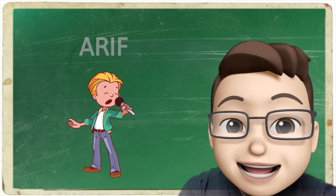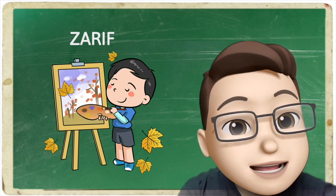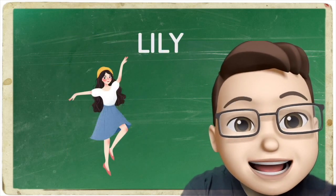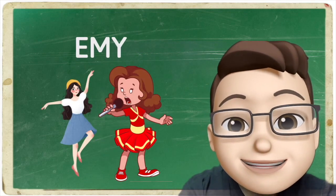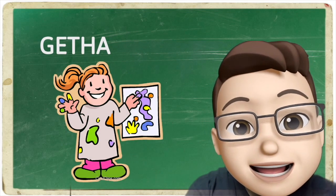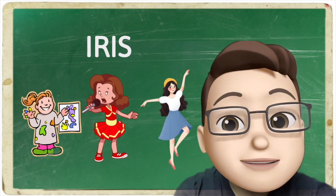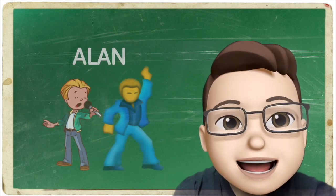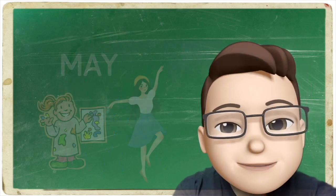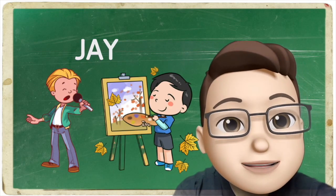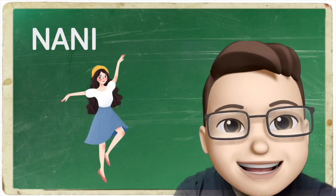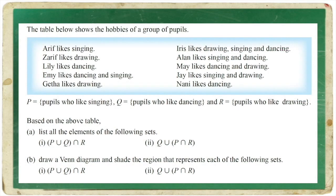Arif likes singing. Zarif likes drawing. Lily likes dancing. Amy likes dancing and singing. Gita likes drawing. Iris likes drawing, singing and dancing. Alan likes singing and dancing. May like dancing and drawing. Jay likes singing and drawing. Nani likes dancing.